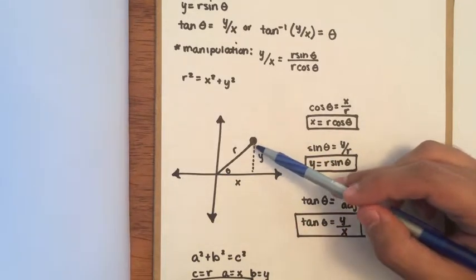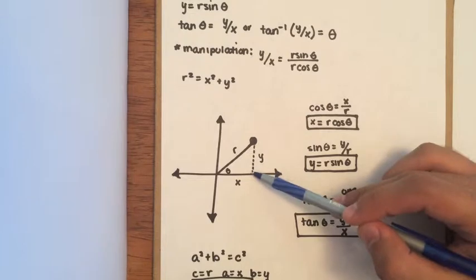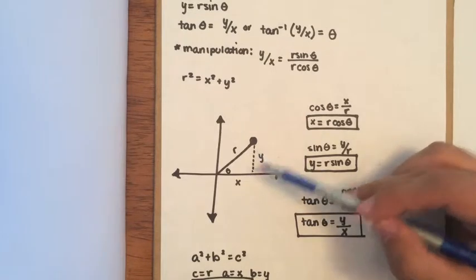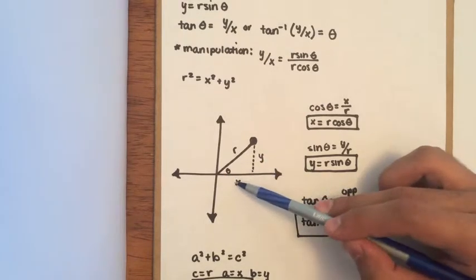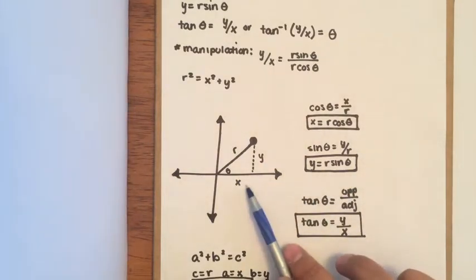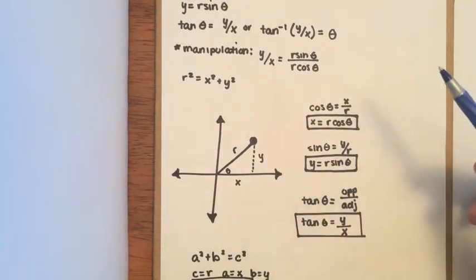If you drop an imaginary line from here down to the x-axis, we're going to call that y, and then you have your value of x there. Based on the Pythagorean theorem,